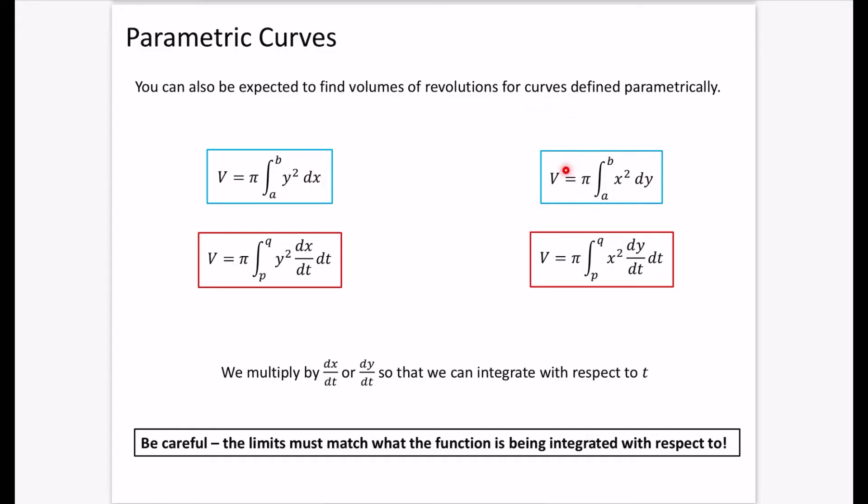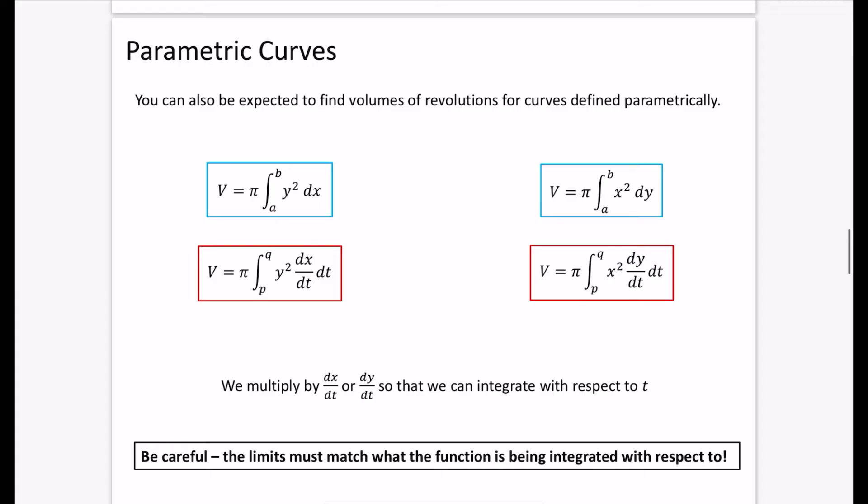Now the ones in blue are our regular volumes of revolution formulae. All that happens if they are parametric is you also have to multiply by an extra dx/dt. The reason we multiply by dx/dt here is so that we can actually integrate with respect to t. Let me explain a bit more. At the moment y is a function of t. Remember that when you do parametric it's in terms of t or theta.